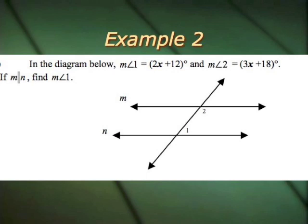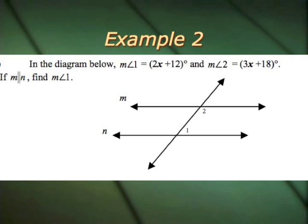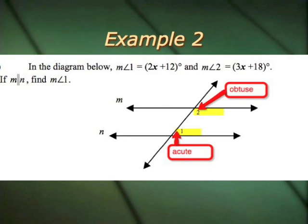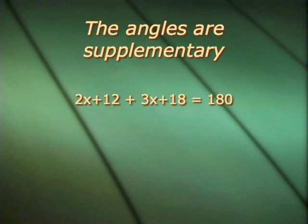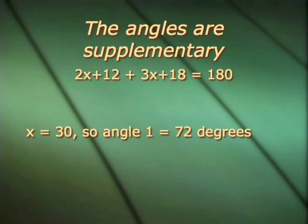Here's example 2. Pause again so you can try it on your own. Did you notice that one's obtuse and one's acute? That means they can't be equal. So you've got to add them up and set it equal to 180. They're supplementary. If you do that, you get x equals 30. So when you plug back in, angle 1 is 72 degrees.